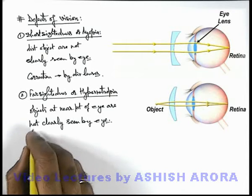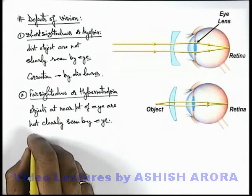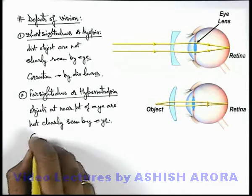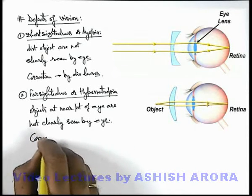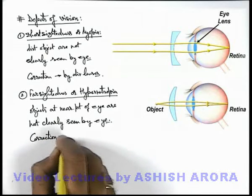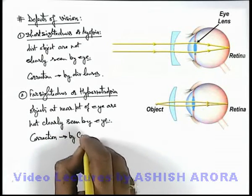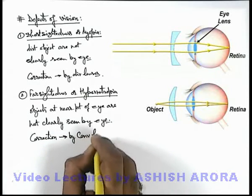So, the correction of hypermetropia can be done by using converging lenses.